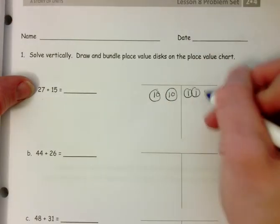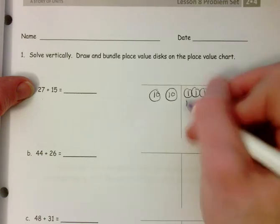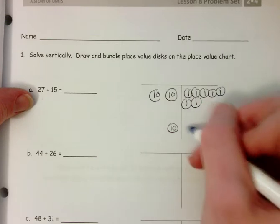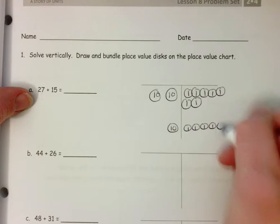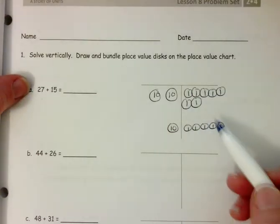27. We have 23, 24, 25, 26, 27, and 15. 11, 12, 13, 14, 15. Students will see where they can bundle.